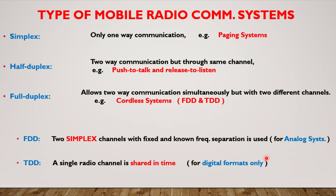In TDD (time division duplexing), a single radio channel is shared in time, so that a portion of time is used to transmit from base station to mobile station and the remaining time is used to transmit from mobile to base station. If the channel data transmission rate is higher than the user's data rate, the user is provided with the appearance of full duplex. TDD is possible only for digital formats and is used for smaller radio coverage areas.